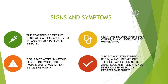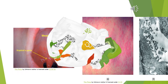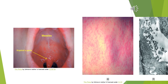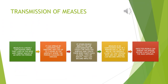Three to five days after symptoms begin, a rash breaks out. It can appear on the neck, arms, legs, and feet. Your fever can spike to 104 degrees Fahrenheit. Here are the tiny white dots that may appear in the mouth of someone infected with measles.